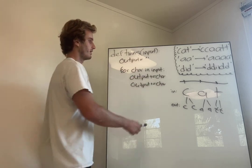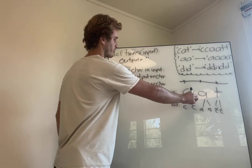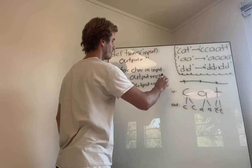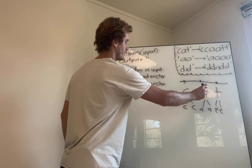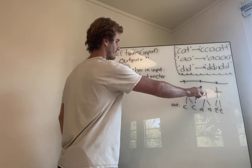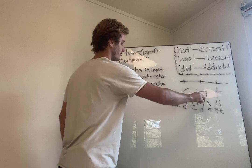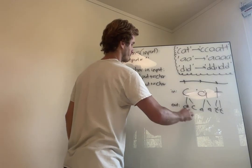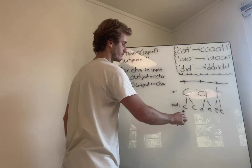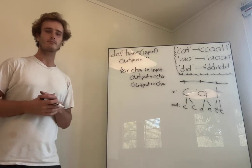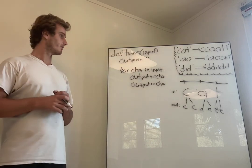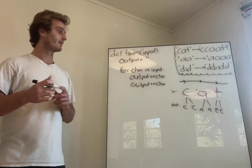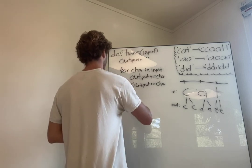For example, if I'm here in my program and I've already done the two C's, output plus equals car — well, 'car' is going to be this A — and it's going to take the A and add it to output once, and then add it to output again. So after that iteration, output gets 'CCAA'. The last thing we need to do to finish off this program is just return output, and we're finished.